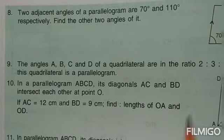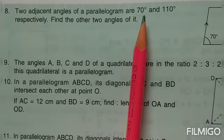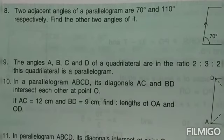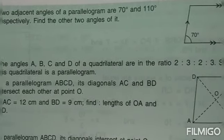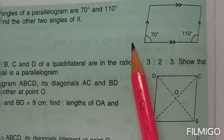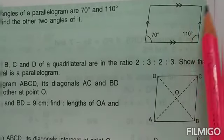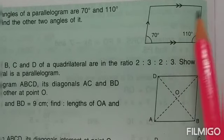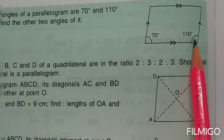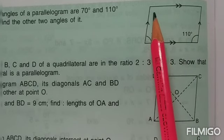Question number 8 is very simple. Two adjacent angles of a parallelogram are 70 and 110 degrees. Find the other two angles. In a parallelogram, opposite angles are of equal magnitude. So if one angle is 70, the opposite angle is also 70, and if one is 110, the opposite is also 110 degrees.